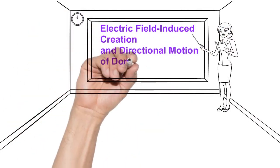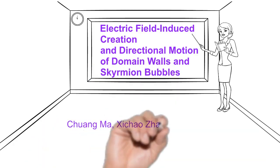Electrical field-induced creation and directional motion of domain walls and skyrmion bubbles.